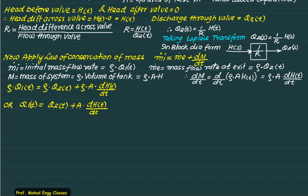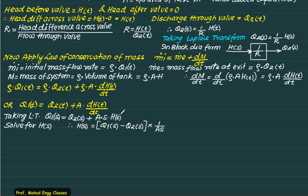Now we can take a Laplace transform. So we will get Laplace transform of Q1(t) is Q1(s). Laplace transform of Q2(t) is Q2(s) plus A. And the derivative Laplace transform is S indicating the derivative operator multiplied by H(s). Now I can solve this equation for H(s).